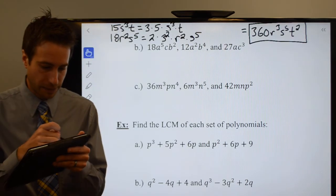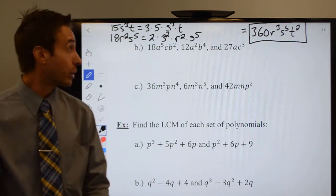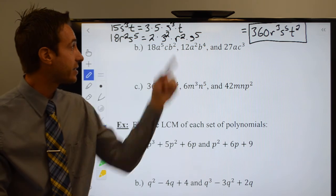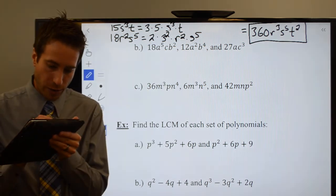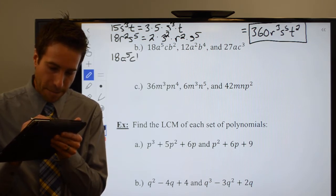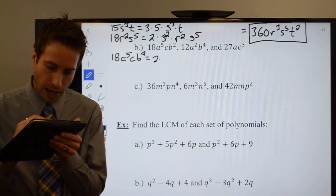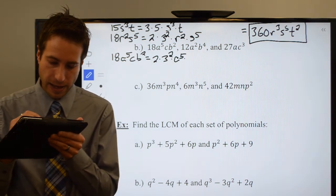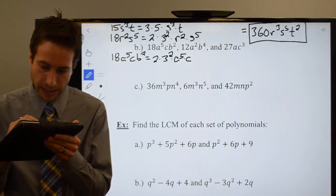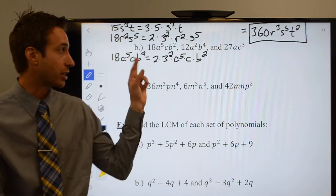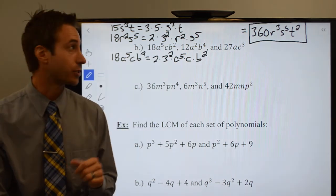Got a couple more for you here. Actually, we already did 18, so we'll just copy what we did for 18. 18a⁵cb². So I know that 18a⁵cb² is going to be 2 times 3² times a to the fifth times c times b². Again, I apologize, my spacing was way too close here. Hopefully you can read that. Sorry it's so small.